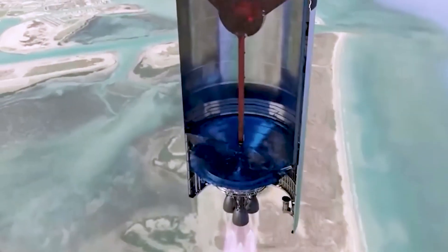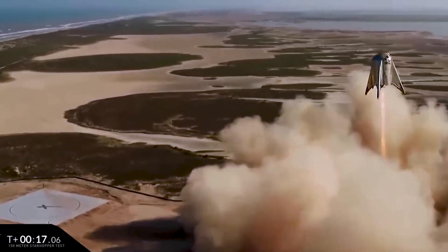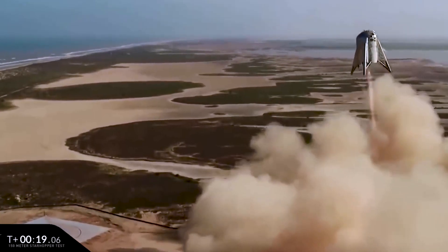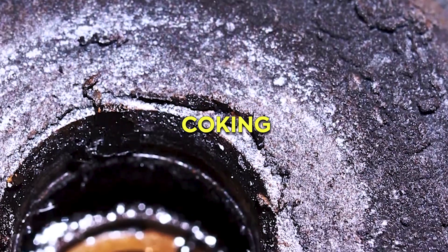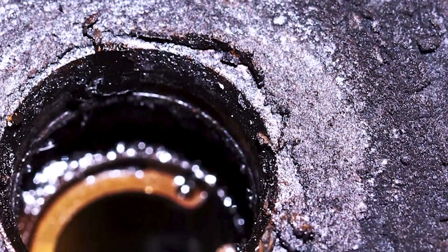While no methane-powered rocket had ever made it to orbit before the Starship's test flight, known as Starhopper, methane offers unique advantages. It prevents the formation of deposits within the engine, a process known as coking, which commonly occurs with other fuels like kerosene.